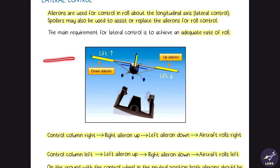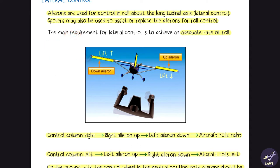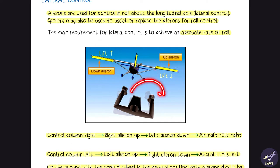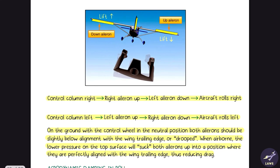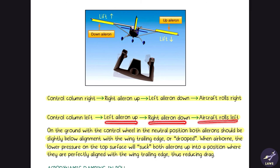On the left side with the down-going aileron, airflow accelerates, creating low pressure and increased lift. Due to less lift on the right side and more lift on the left side, the aircraft rolls to the right when the control column is moved right. Similarly, when the control column is moved to the left, the left aileron moves up, the right aileron moves down, and the aircraft rolls to the left.